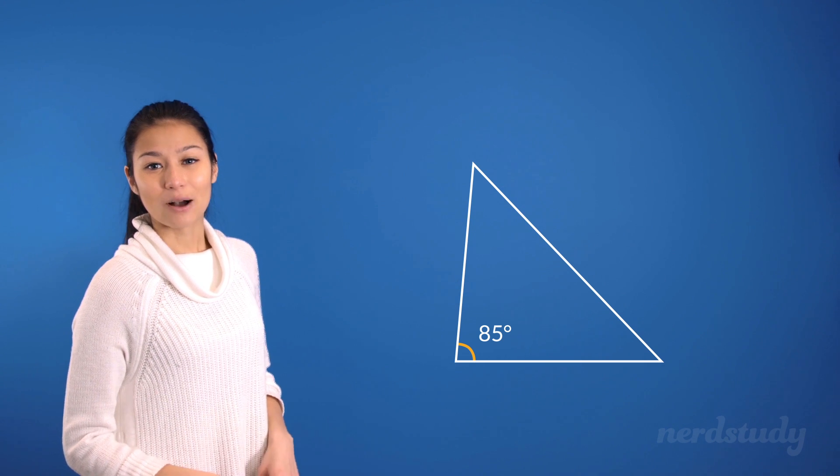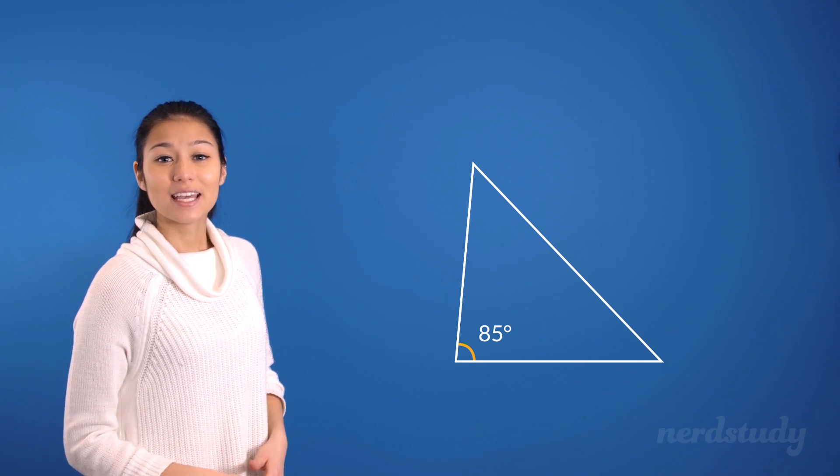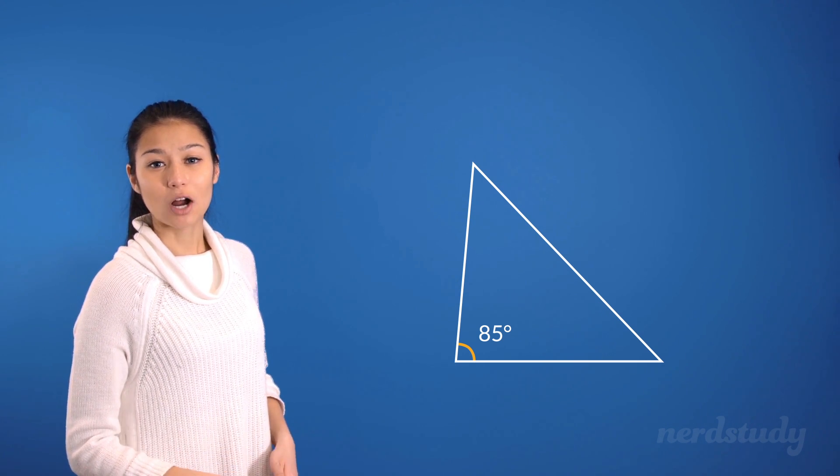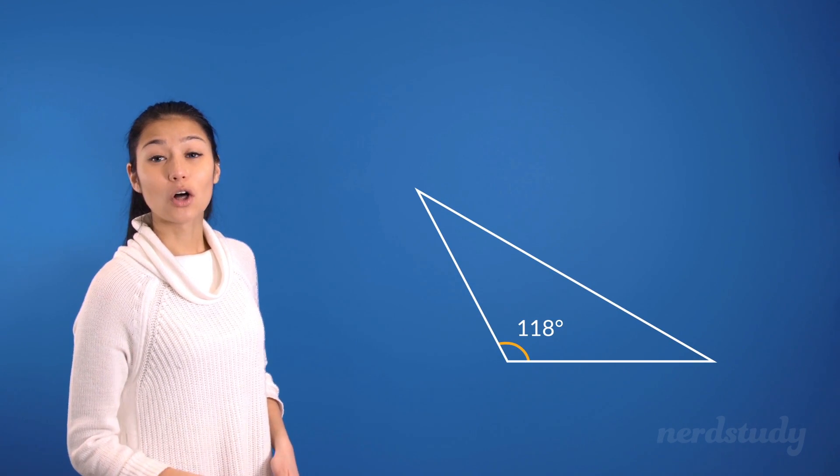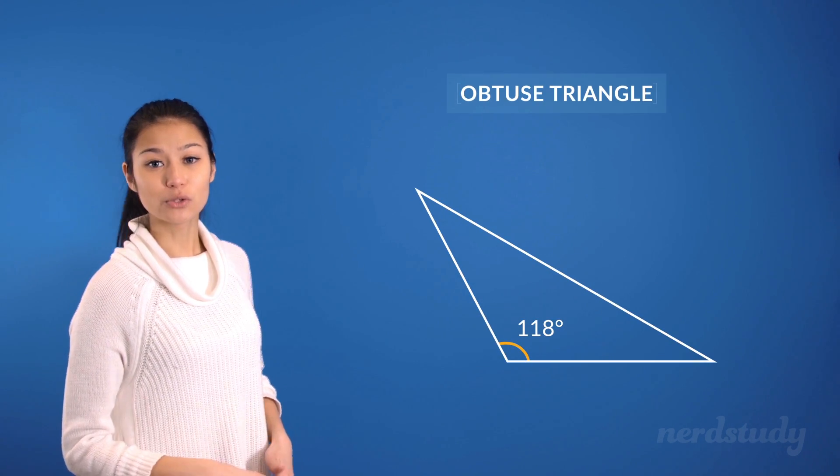On the other hand, if the largest angle within a triangle is greater than 90 degrees, then we would call this type of triangle an obtuse triangle.